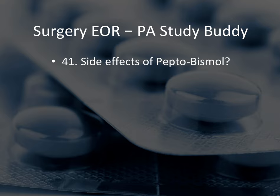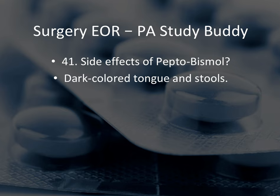What are the side effects of Pepto-Bismol? These are questions easily asked during clinical rotations. Side effects of Pepto-Bismol are dark-colored tongue and stool. They can tell you a patient pre- or post-operatively reported very dark-colored stool, you do a physical exam and see a dark-colored tongue, then ask which medication is most likely the cause — the answer is Pepto-Bismol.